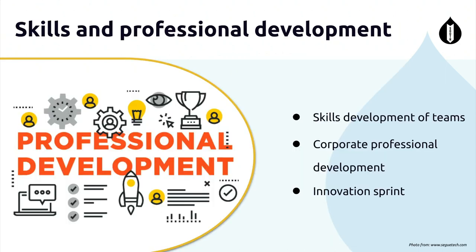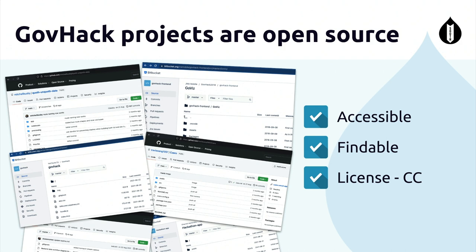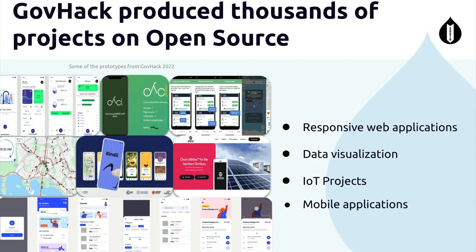GovHack — and all hackathons — have been used as a professional development opportunity in different organizations, even in government. Corporate professional development programs now mostly include hackathons in their programs, and some agile frameworks even promote hackathons as an innovation sprint. GovHack projects are all open source: they are findable, accessible, and all follow the Creative Commons license. Over the last 13 years, GovHack has produced thousands of open source projects — most of them are responsive web applications, a lot of data visualization because it's all about open data, a lot of IoT projects, and some mobile applications.